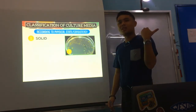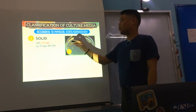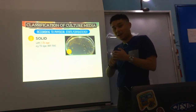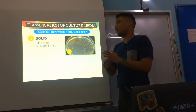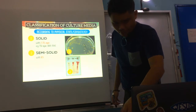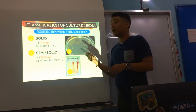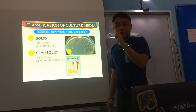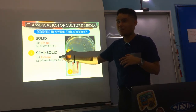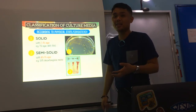For physical state or consistency: you have solid, semi-solid, and liquid. Solid media has about 2 to 3% agar. Good examples are plates in petri dishes — blood agar plate (BAP), MacConkey (MAC), and triple sugar iron (TSI) agar. Semi-solid media has only 0.5 to 1% agar. Examples are SIM (sulfide indole motility) and decarboxylase media. We'll go further into these during biochemical testing for gram-negative bacilli.